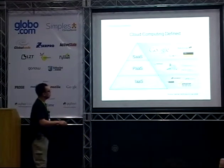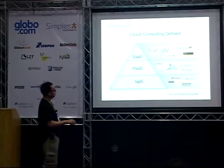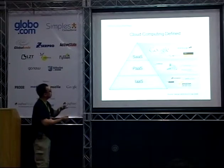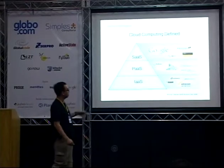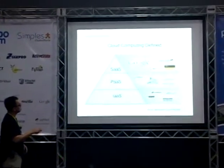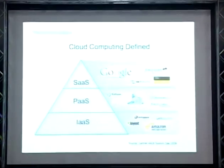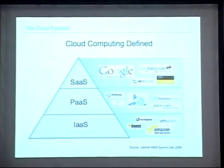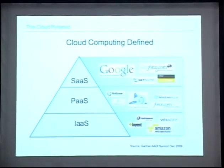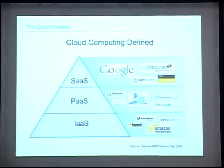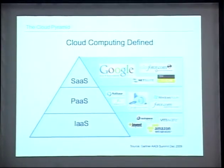A US analyst company called Gartner categorized cloud computing into three areas. Software as a Service means you have an application that you need a web browser to use — like Yahoo Mail, Gmail, Google Docs, or Salesforce. You have to be connected to the internet to use those applications. You have no control over the software, the operating system, the hardware, or anything — except maybe your configuration settings for your account.